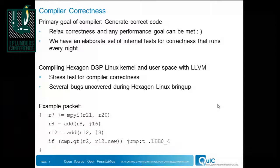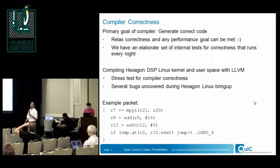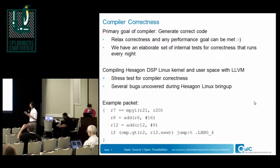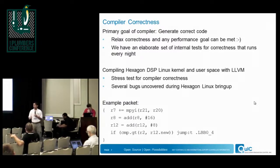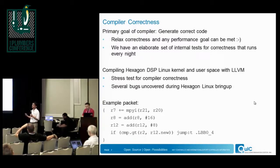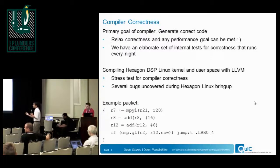The primary goal for a compiler is to provide correct code generation — if you relax that requirement, getting performance is extremely easy. We have an elaborate set of internal tests run every night, but we want to stress test the compiler for correctness. We believe we can use the Linux kernel and user space to guide other compiler goals too — code size is something we care a lot about in the embedded space.